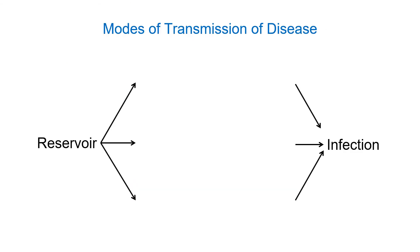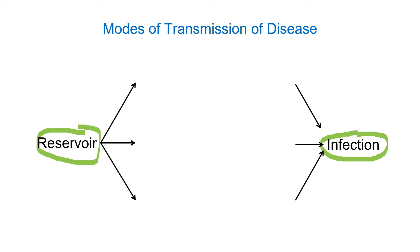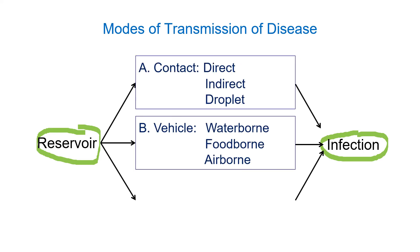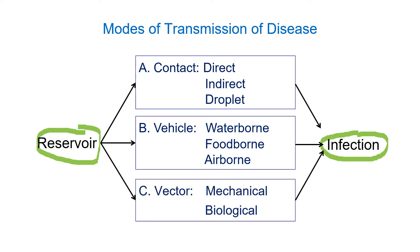So how does an organism get from a reservoir to causing an infection? The organism has to be transmitted from one individual to another, or from the reservoir to the infected individual. There are three methods: contact, vehicle, and vector transmission.